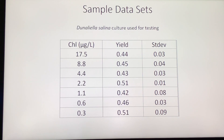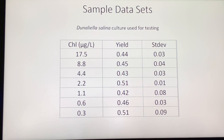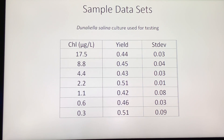This data set shows yield values across various chlorophyll concentrations. The concentrations were made by diluting a parent culture of Dunaliella. Although the concentration dropped to near minimum detection limits, the yield parameter is unchanged, telling us that Aquaflash provides reliable yield estimates even at really low algal concentrations.